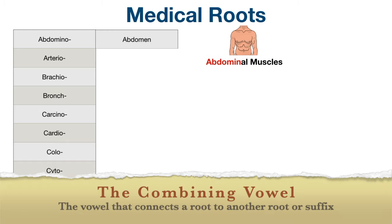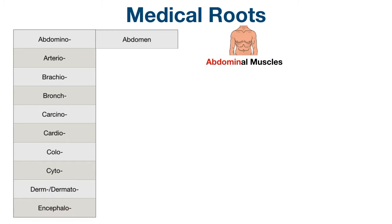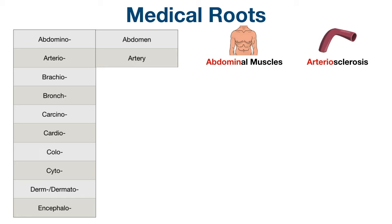The vowels are what connect the root to another root or suffix. Next, we have arterio, which refers to artery. Arterio and artery sound the same, making it easy to remember. An example medical term is arteriosclerosis, which is the thickening or hardening of the walls of the arteries.